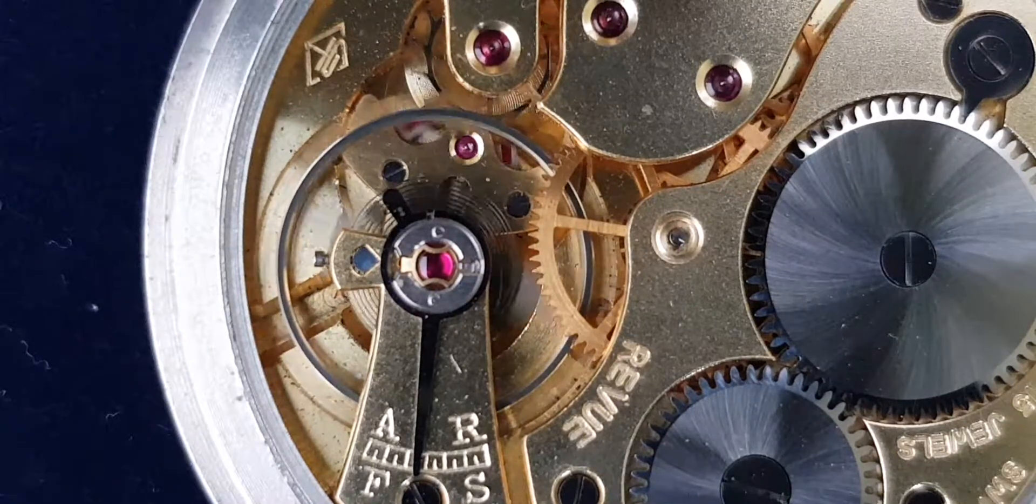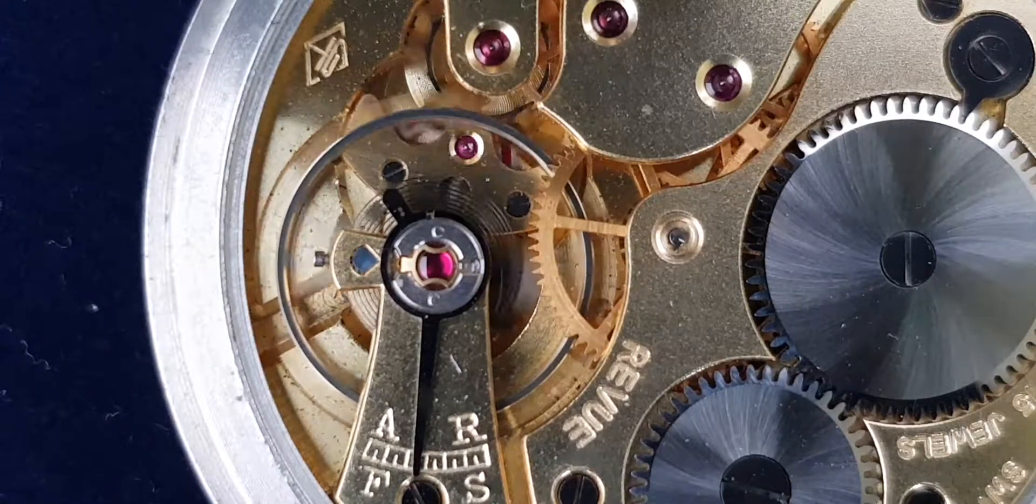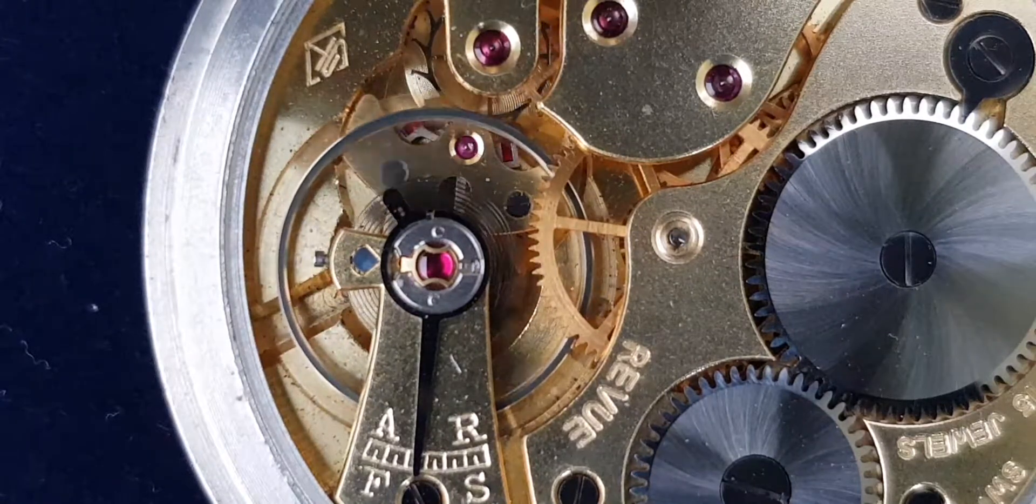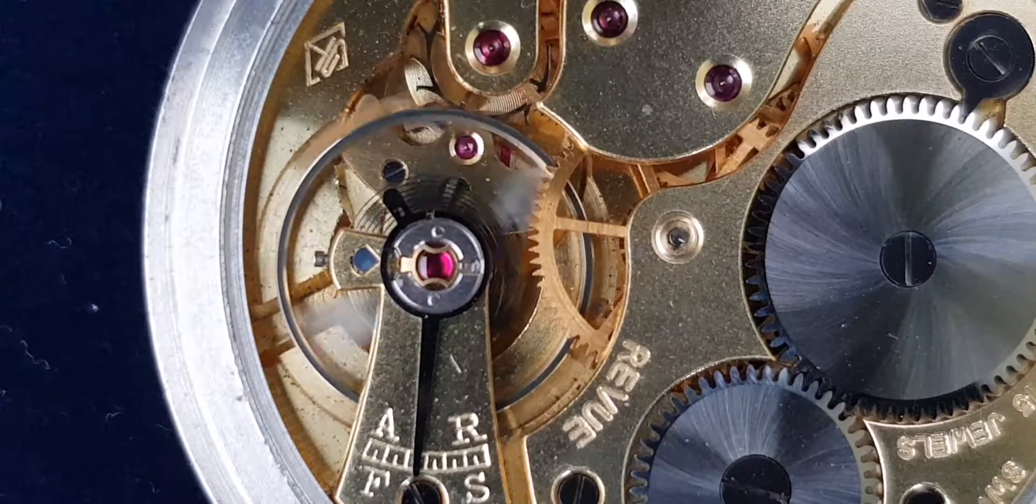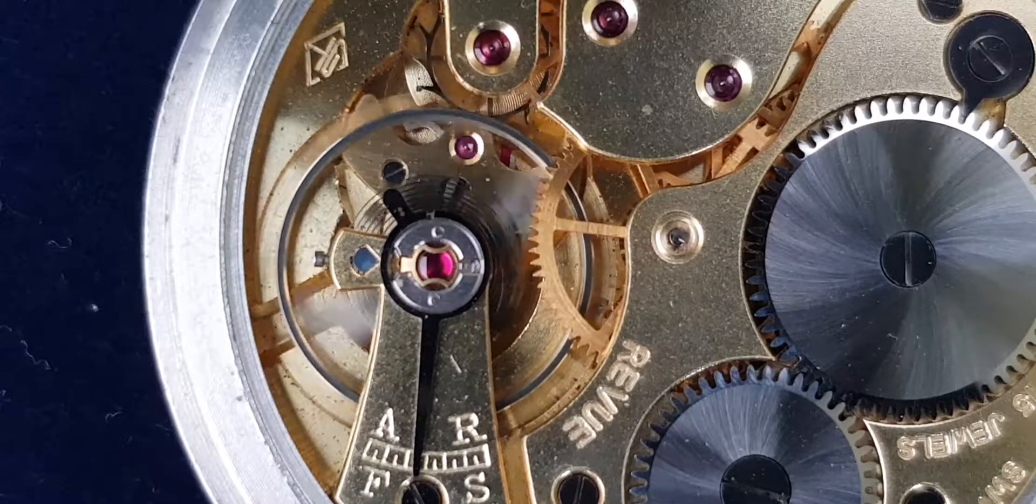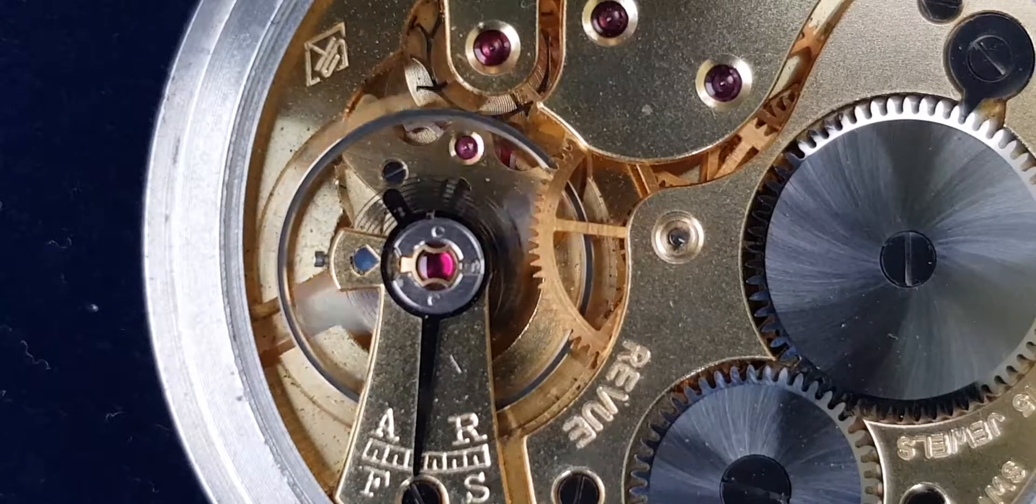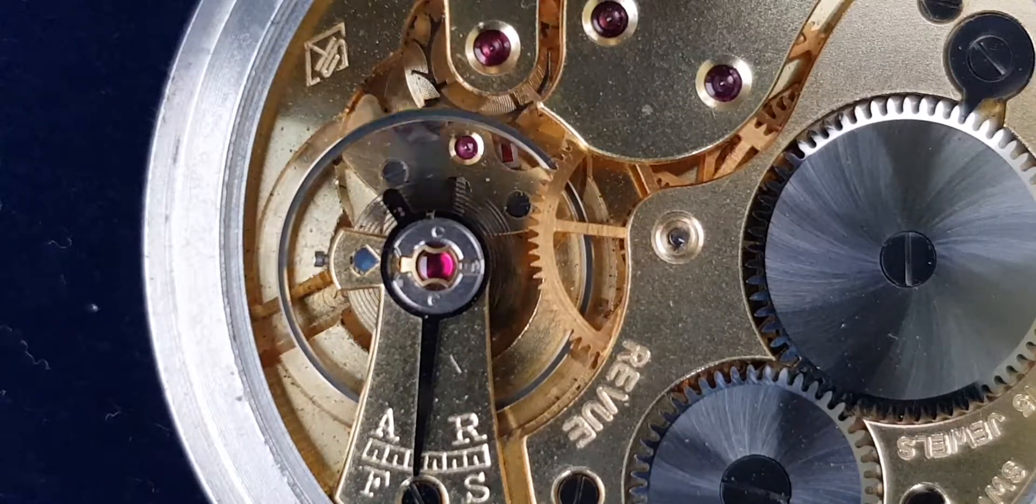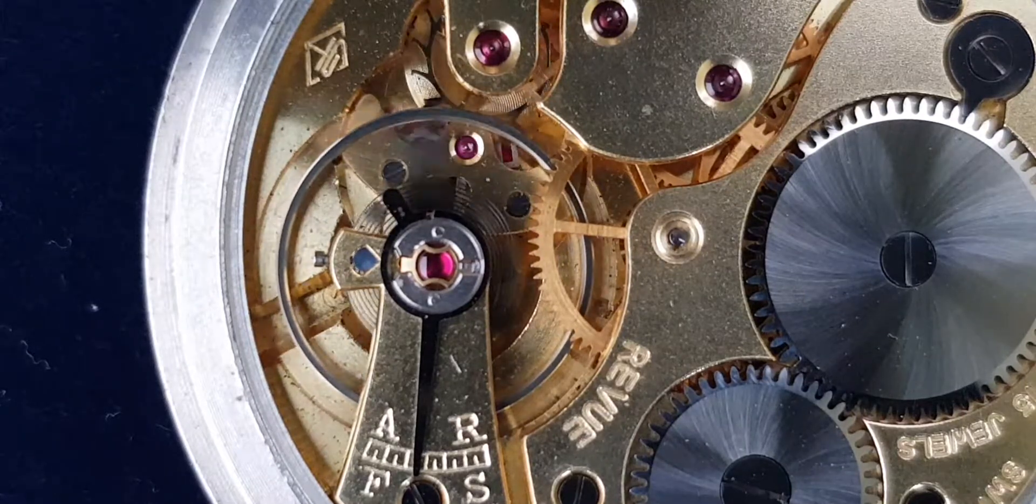IncaBlock is a common shock protection system used in mechanical watches, recognizable due to its wire-shaped spring. The IncaBlock shock protection system is a trade name for a spring-loaded mounting system for the jewel bearings that support the balance wheel in a mechanical watch, to protect the wheel's delicate pivots from damage in the event of physical shock, such as if the watch is dropped.